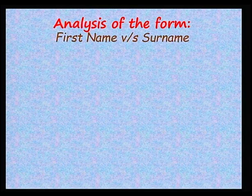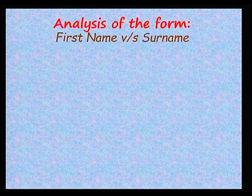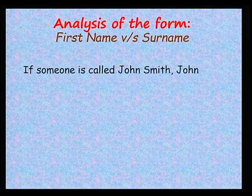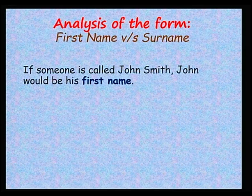Next, we are asked to give first name and surname. What is the difference between first name and surname? Our first name is a name by which friends usually call us. As for surname, this is our family name. If someone is called John Smith, John would be his first name and Smith would be his surname.